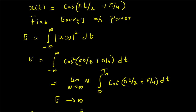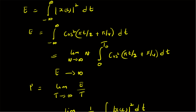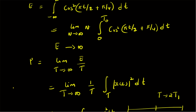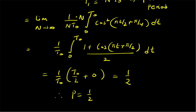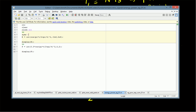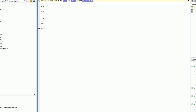To summarize: we have the signal x(t) = cos(πt/2 + π/4) and computed both energy and power. The energy formula is the integral from minus infinity to plus infinity of |x(t)|² dt. Since x(t) is periodic, the energy is infinity. The power is defined as the limit as T tends to infinity of E/T, giving power = 1/2. We verified both results using MATLAB with the symbolic toolbox and the integral function, confirming energy = infinity and power = 1/2. Thanks for watching.